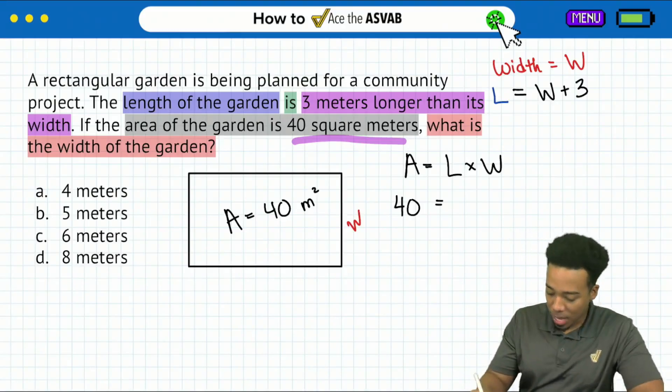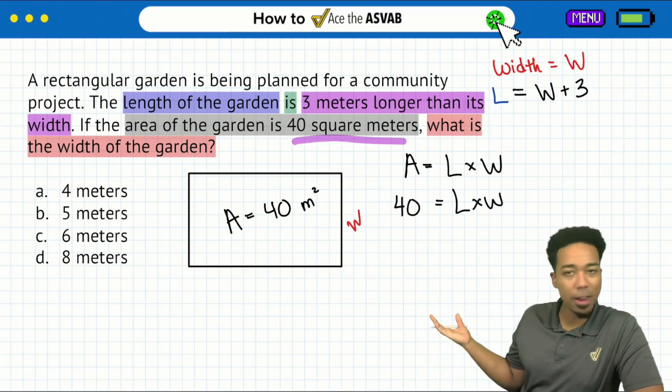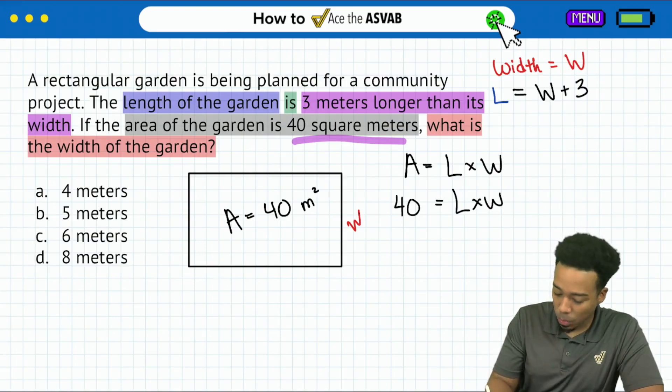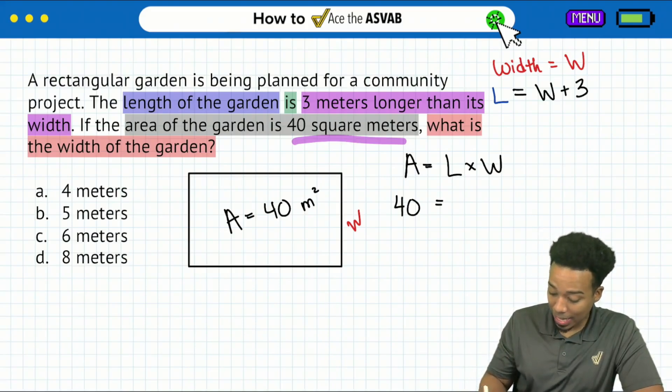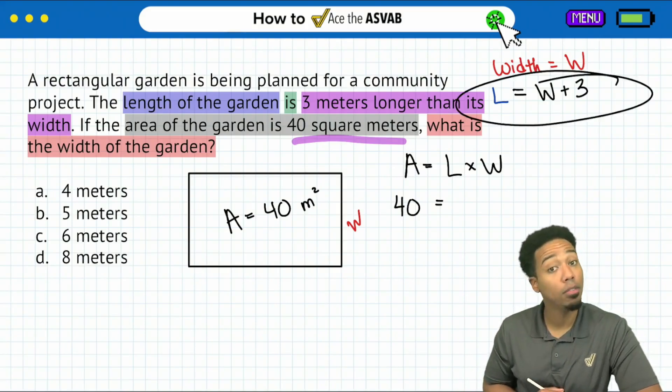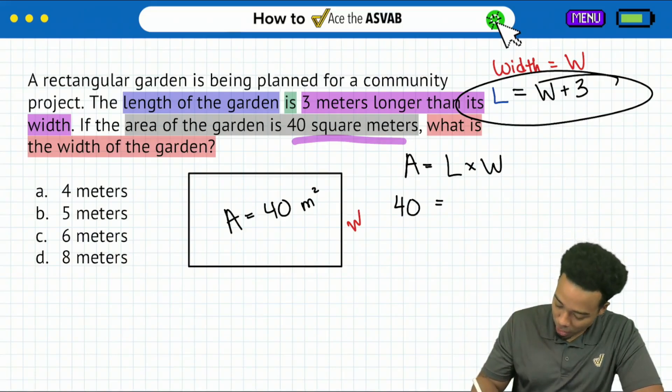All we need to do here though is this. Understand that if we had length times width, this is not solvable. We have two variables. We have two different variables we can't solve here. So instead what I'm going to do is I'm going to write my length in terms of the width.